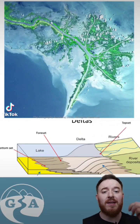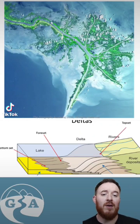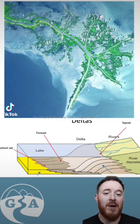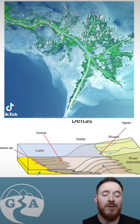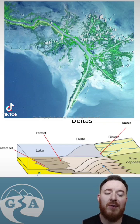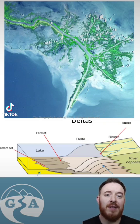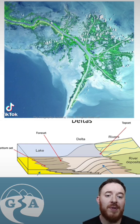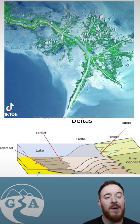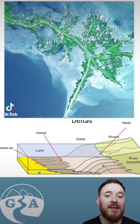Deltas like this one are formed at the mouth of the river, at the very end in the lower course, the lowest part of the course. We see that the velocity suddenly changes because the river opens up very wide, it becomes very deep, and it begins to form landscapes through deposition.